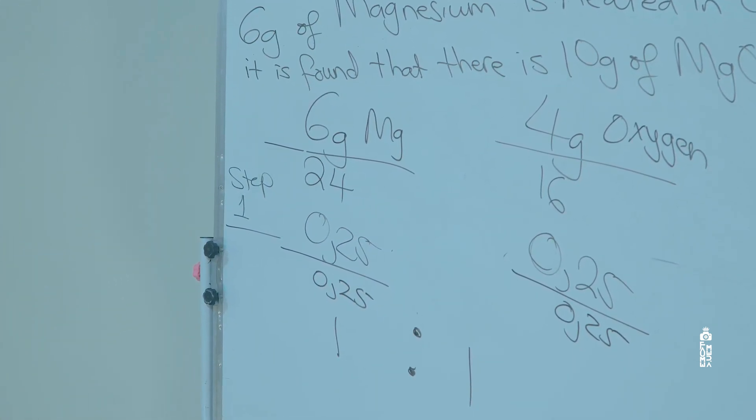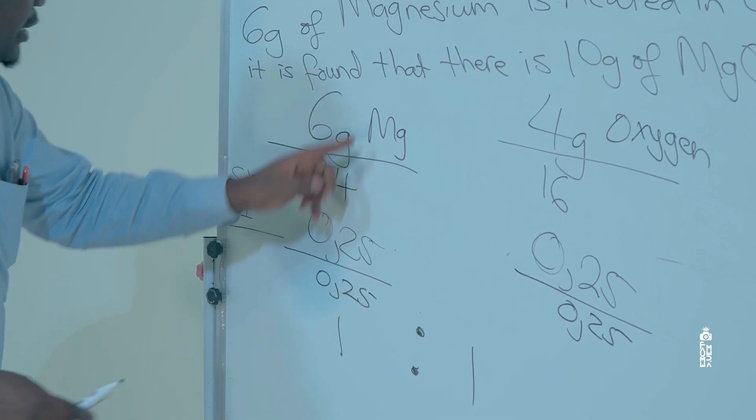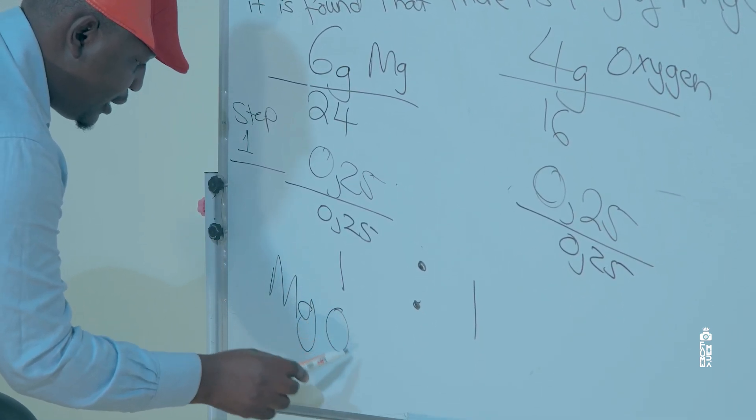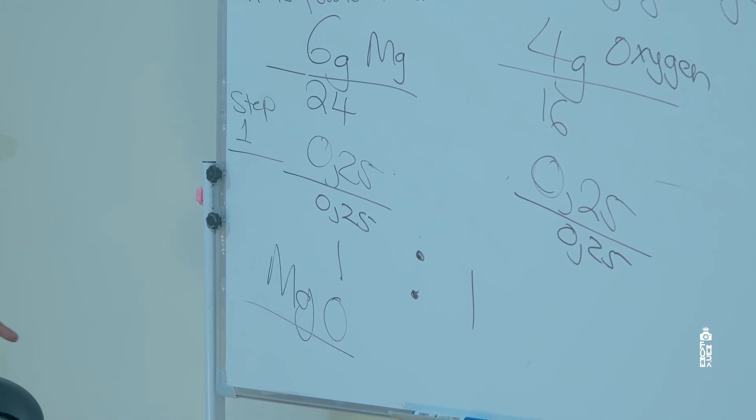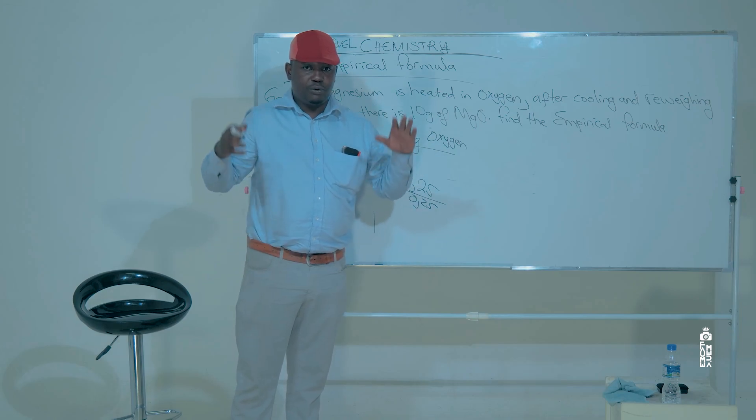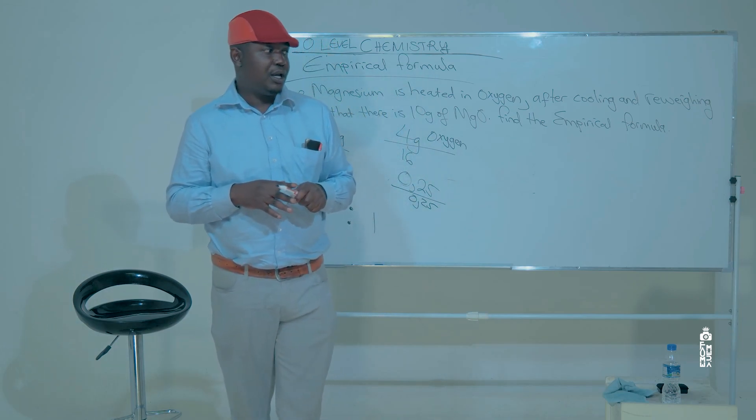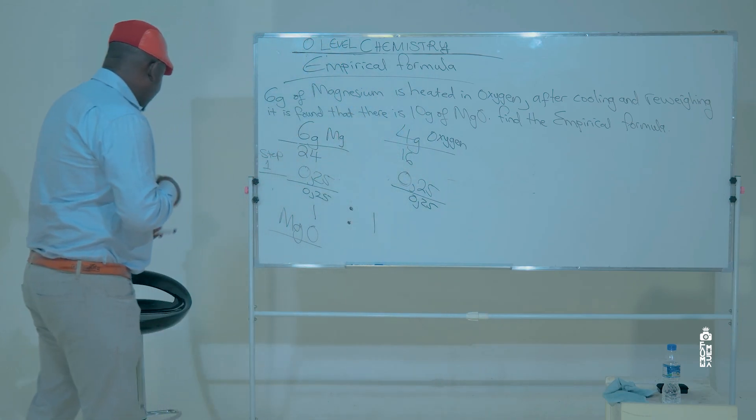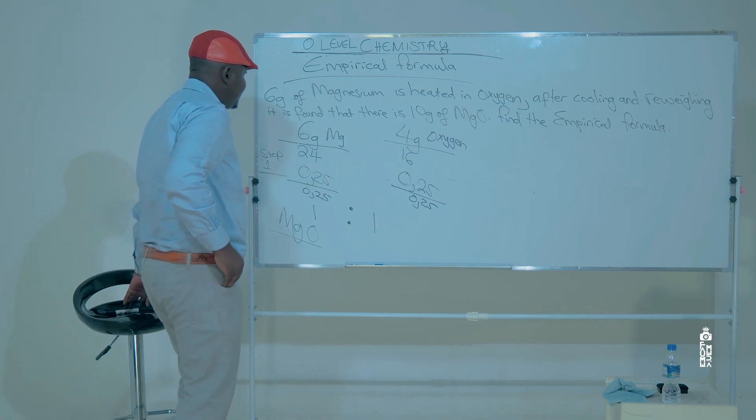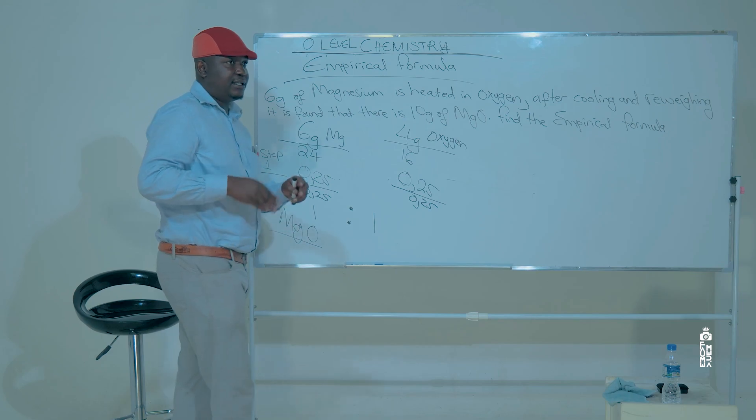So we are going to say it's MgO. That's the empirical formula because the ratio is 1 is to 1, magnesium to oxygen, so it's going to be MgO. Let me look at the next question.